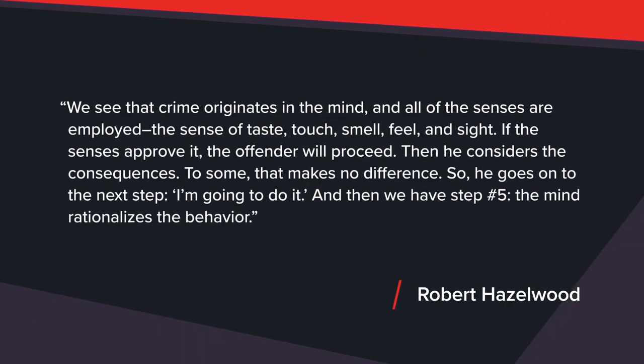Berg decided that Curtin was a depraved megalomaniac and a sadistic psychopath. Curtin would have continued to kill had he not been stopped. He'd been born with a predisposition for deviation, and his early experiences had conditioned him toward abnormality. Prison time had provided the opportunity to nurture his fantasy life. Once free, he'd acted out. Former FBI profiler Robert Hazelwood studied how sexual sadism often starts with a detailed, persistent fantasy like Curtin's. As Hazelwood once stated: 'We see that crime originates in the mind and all of the senses are employed — the sense of taste, touch, smell, feel, and sight. If the senses approve it, the offender will proceed. Then he considers the consequences. To some, that makes no difference. So he goes on to the next step. I'm going to do it. And then the mind rationalizes the behavior.'